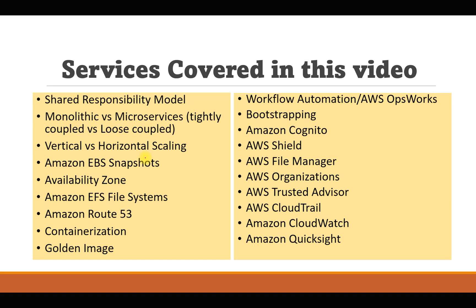We'll go through services like EBS snapshots, availability zones from AWS architecture, EFS file system which is similar to a file server in the cloud, Route 53 which is the DNS service, containerization — converting applications into containers using Docker or other container runtimes — golden images, AWS OpsWorks for workflow automation, bootstrapping, Amazon Cognito for sign-in and sign-up for mobile applications, and AWS Shield for protection from DDoS attacks. Also AWS Firewall Manager — not file manager, firewall manager.